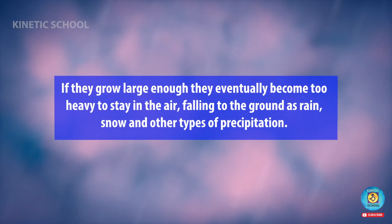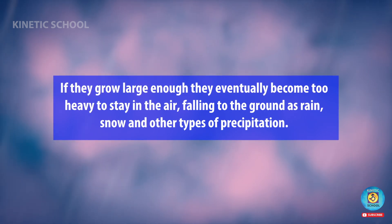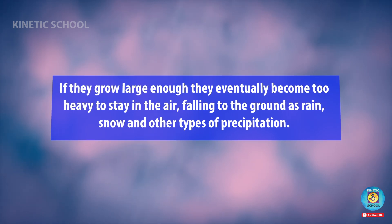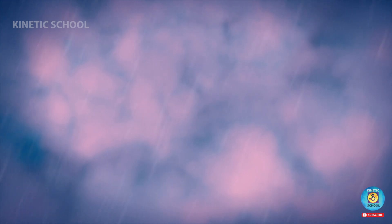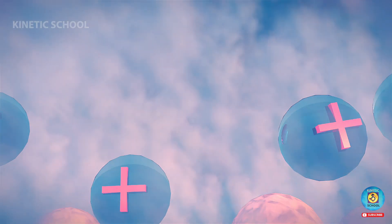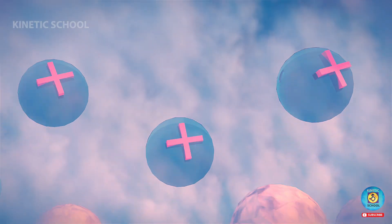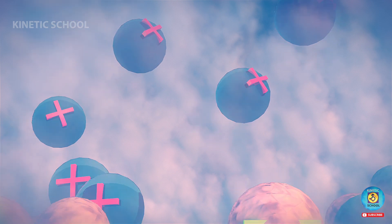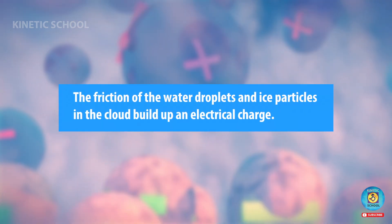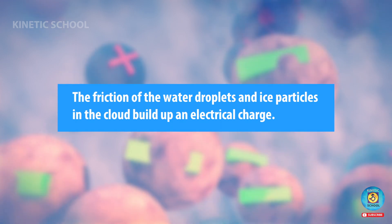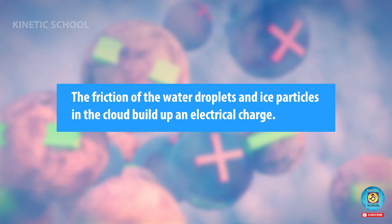If the droplets grow large enough, they eventually become too heavy to stay in the air, falling to the ground as rain, snow, and other types of precipitation. The friction of the water droplets and ice particles in the cloud builds up an electrical charge.